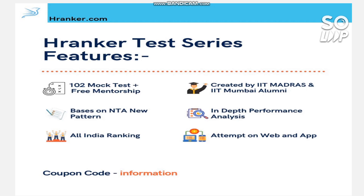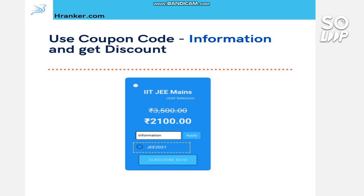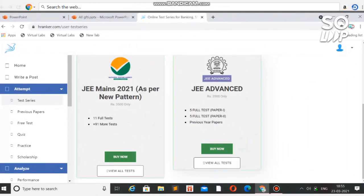You just need to enroll in this test series and you can get a discount at this time. After giving each test in this series, you will get an all-India ranking and a full analysis of which topics are strong and which are weak for you. There are topic-wise tests and whole syllabus tests also. You can attempt it on web, mobile, laptop, or computer. Use the coupon code 'INFORMATION' to get a discount of 1400, and enroll for just 2100. If you join using my code, you also get access to the JEE Advanced test series for free.